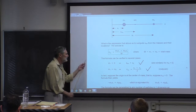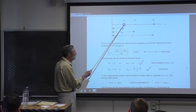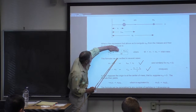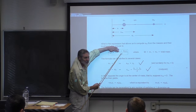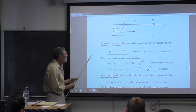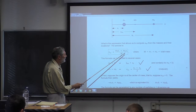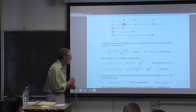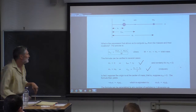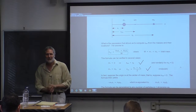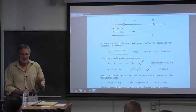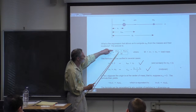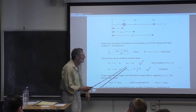Let's verify with some special cases. Suppose M1 is equal to zero — where does the center of mass have to be? It's going to have to be at M2's position. Does our formula reduce to that? M1 is zero, so that term is gone, and the total mass is just M2. It works. It also works for M2 being zero. And when the masses are equal, the center of mass has to be at the midpoint by symmetry — and our formula gives exactly that.